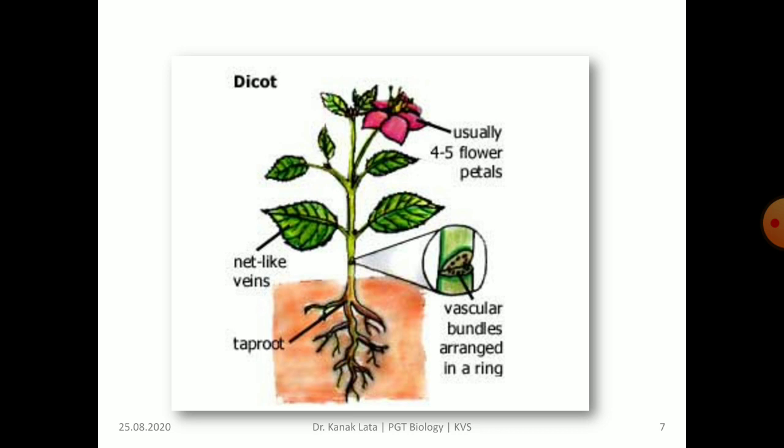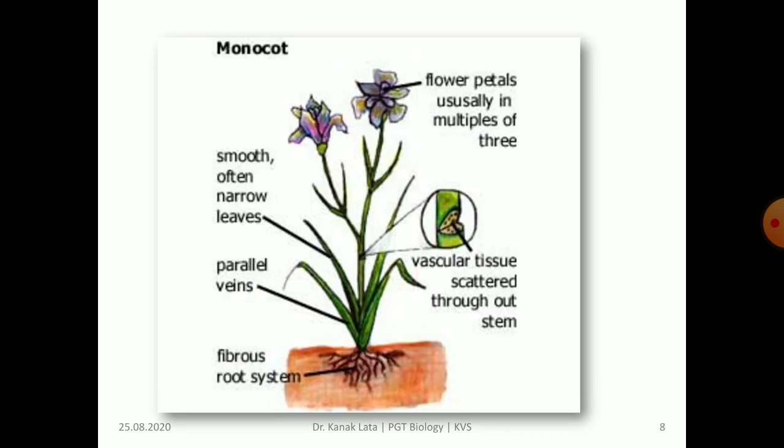Here you can observe a dicot plant. How will you identify it? By identifying the type of root, that is tap root, and the leaves are also having net-like venation, called reticulate venation. In monocot plant, the leaf has parallel venation and roots are also fibrous. Later on we will see more differences between dicot and monocot plants.